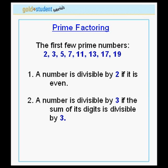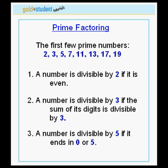Another trick is that a number is divisible by 3 if the sum of its digits is divisible by 3. For example, the number 21: if you take the first digit 2 and add it to the second digit 1, you get 3. That number is divisible by 3, so 21 is divisible by 3.